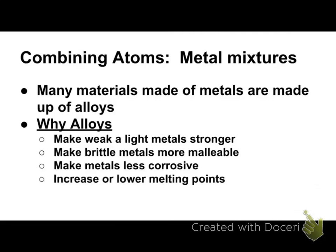Sometimes we make alloys to increase or lower melting points. For example, ball bearings made of iron might have cobalt added to increase their melting point due to friction. Solder is an example of lowering the melting point — you heat a metal with a propane torch or soldering iron, it melts and then solidifies, sealing whatever you need. There are two types of solder we'll look at.